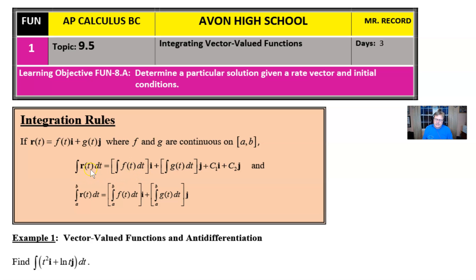If we want to integrate vector r, we just simply integrate the piece that's in front of the i and integrate the piece that's in front of the j. It's exactly as you would have thought.